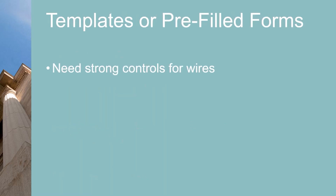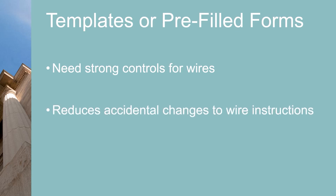Your company wants to have strong control over who has access to wires and controls over assuring correct wire recipient information. For example, you may have an account or vendor to which you periodically send wires. You want a form or template for those wire instructions that doesn't allow accidental changes to recipient information, but does allow changes to the amount of the wire. This also applies to common ACH transactions.